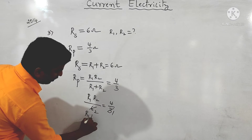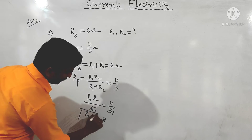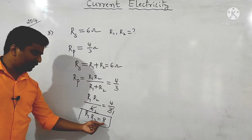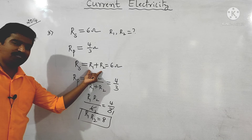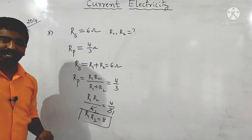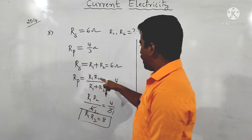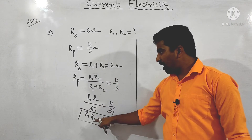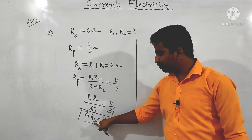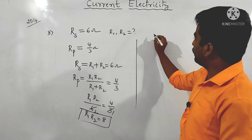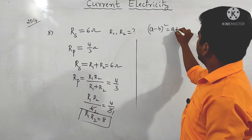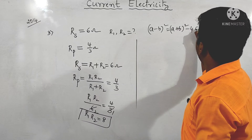To find the individual values, we use the identity: (R1 − R2)² = (R1 + R2)² − 4 × R1 × R2.